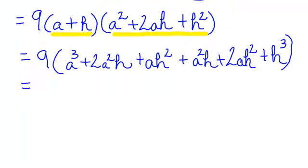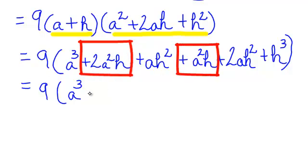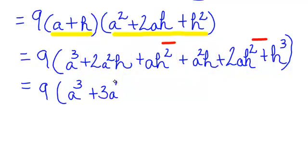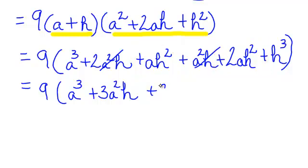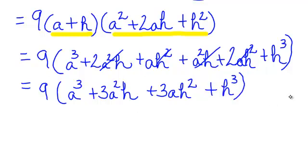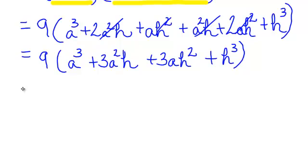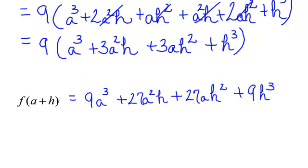I believe that I have some like terms. I only have one a to the third, but I have 2a squared h and 1a squared h, which will be 3a squared h. And I have ah squared plus 2ah squared, which will be 3ah squared, plus h to the third. Now I will multiply everything times 9. So after a lot of work, we have found that f at a plus h is equal to that polynomial.